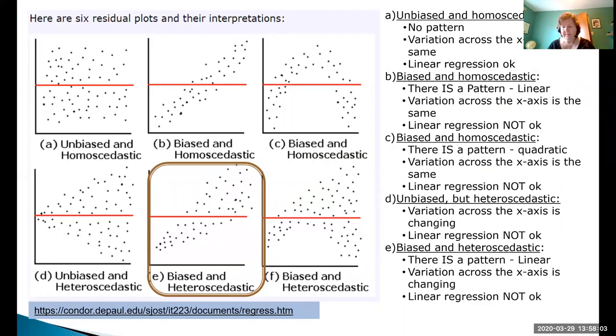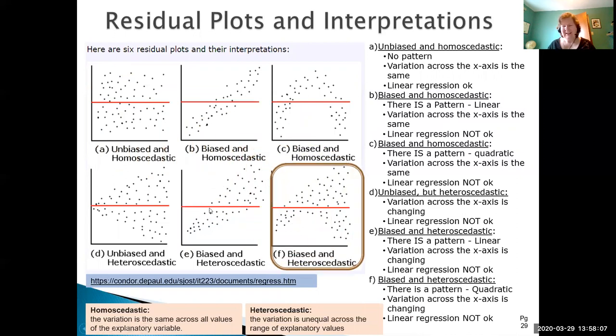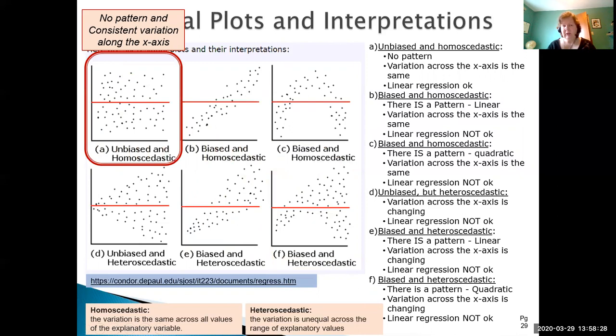And then finally example f we do have again a somewhat quadratic pattern going on here. So it's definitely biased and we can see that the variation is increasing as we go along the x-axis. So heteroscedastic so linear regression is not okay. So what we need to remember is that to look at a residual plot if we have no pattern and consistent variation along the x-axis then linear regression is fine and that's shown by the single example that's highlighted. All these other ones are showing either patterns or increasing in variation. We could also have the reverse we could have a decreasing variation so think of the flip view of this. So the only one that would be good is this one.